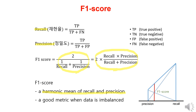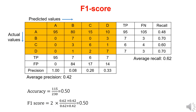Recall and precision have a trade-off relationship, which means that when one increases, the other decreases. Therefore, it is important to find a point where recall and precision harmonize. The F1 score is an evaluation metric that can be used to assess models with imbalanced data. This slide demonstrates the process of calculating precision, recall, and F1 score from the confusion matrix.